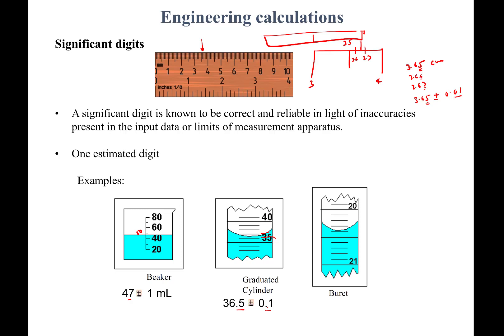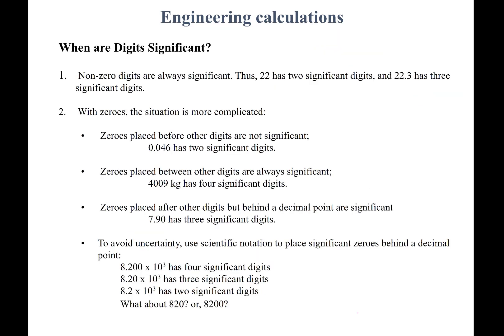For a burette, we have markings at 20.1, 20.2, 20.3, 20.4. The level is between 20.3 and 20.4, so we could say 20.38 mL. Since the last digit is estimated, the error is ±0.01 mL. Once you write the number, you can see what your error range is, because the estimated digit is in the hundredths place. Now we need to be able to count how many digits are significant.